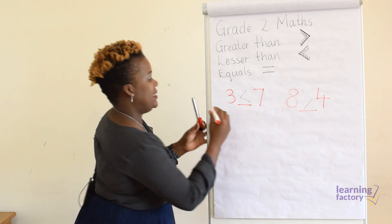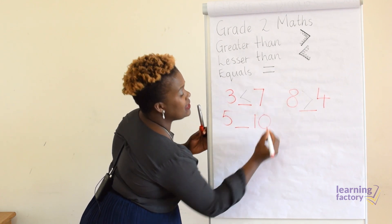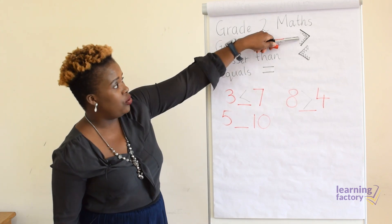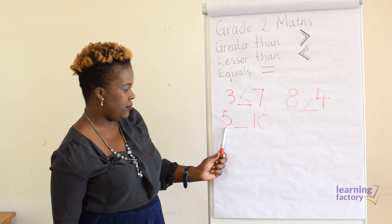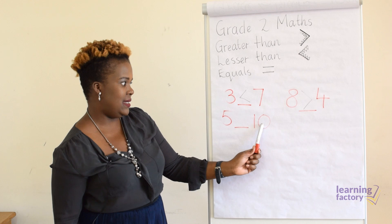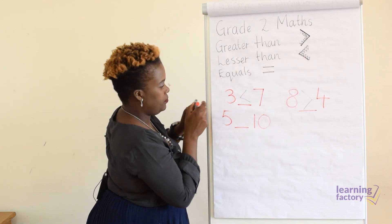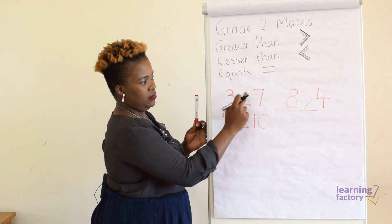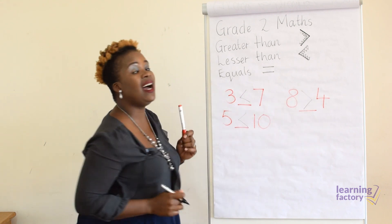Let's have five and ten. I hope you're starting to understand better how to use your greater than, less than, and equal signs. Five is lesser than ten, so you put your lesser than sign. Can you see your sign is always facing the bigger number?